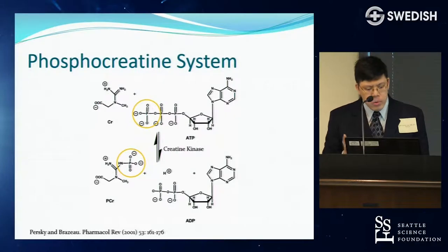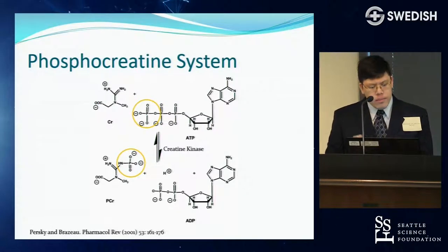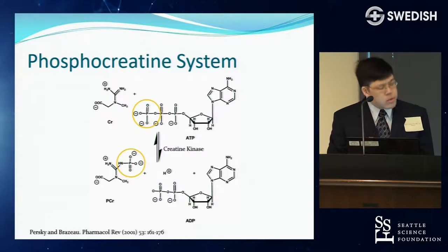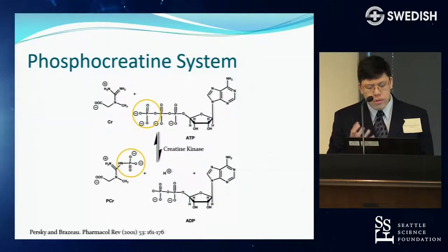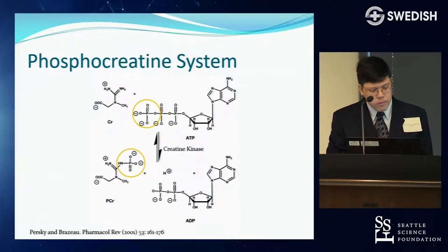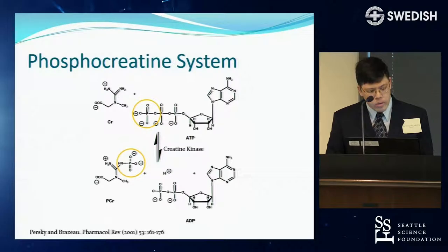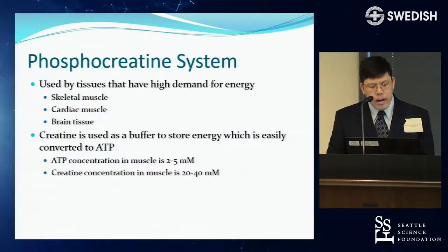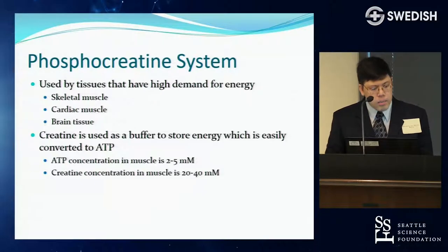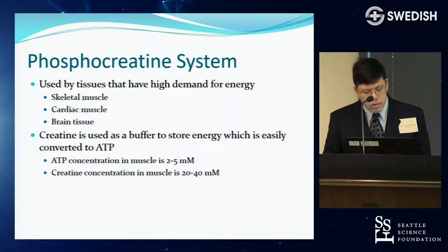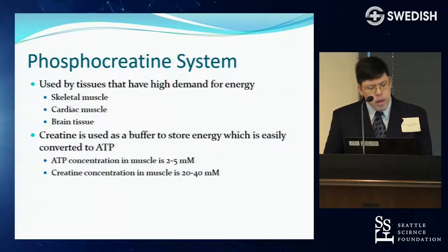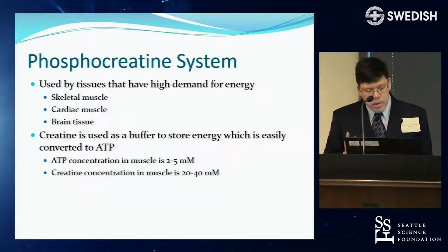In the muscle, there is a phosphocreatine system where the energy from ATP — the currency of energy in the cell — can be transferred to creatine to form phosphocreatine. Creatine kinase is an enzyme that catalyzes that reaction. It's used by tissues with high energy demands, like muscle and brain. Creatine acts as a buffer to store energy so it can be quickly converted back to ATP when needed.